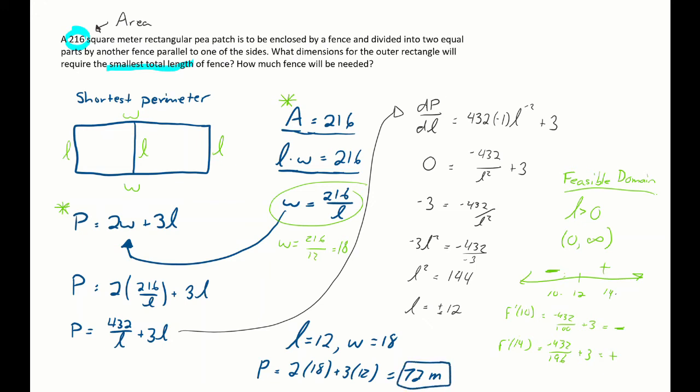All right, so our optimization. Find the equation you're trying to optimize, and then find another equation that constrains those same variables. Get your optimizing equation in one variable. Find the derivative to find the critical numbers. Think about the feasible domain, and then finish out your calculations to find either the minimum or the max.